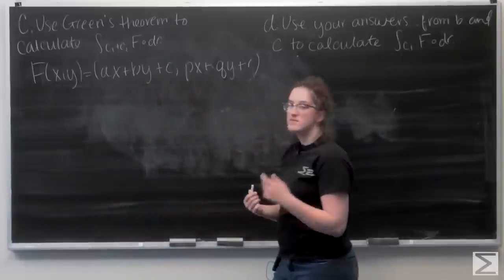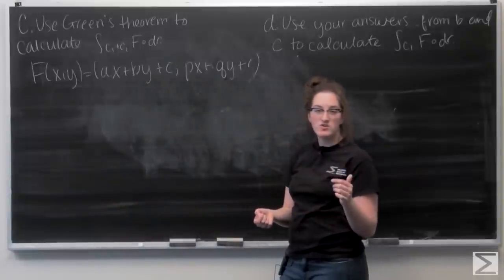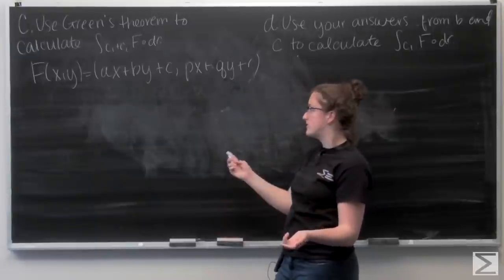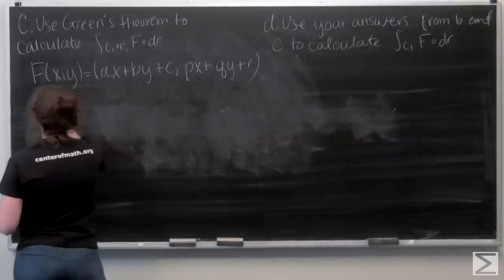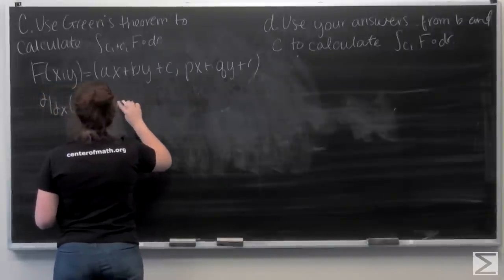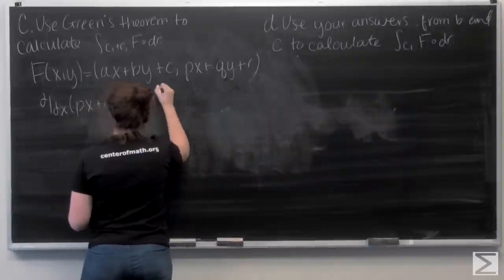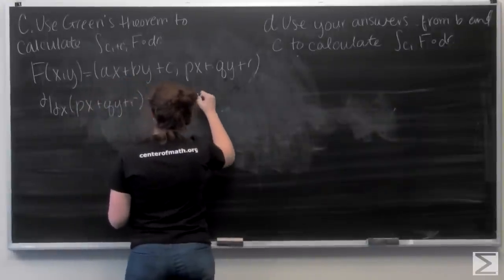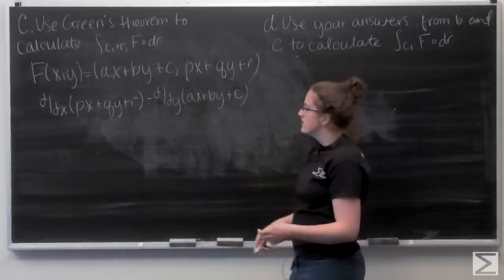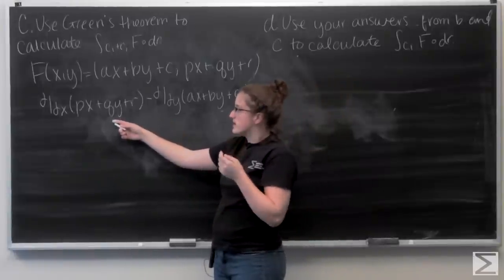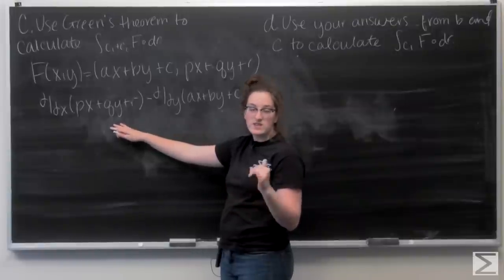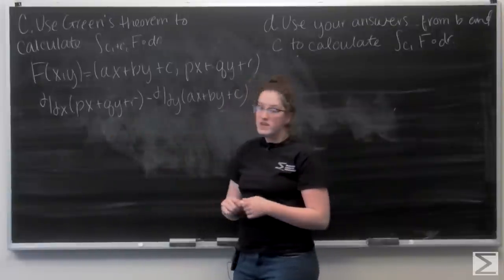To find the two-dimensional curl, I want to take the partial derivative with respect to x of the second component of the vector and then subtract the partial derivative with respect to y of the first component. So let's go ahead and calculate this. For the first term, I have the partial derivative with respect to x of px plus qy plus r. Well, qy plus r are going to be treated like constants, so when I take the derivative they're going to go to 0. Then the derivative of px is just going to be p.